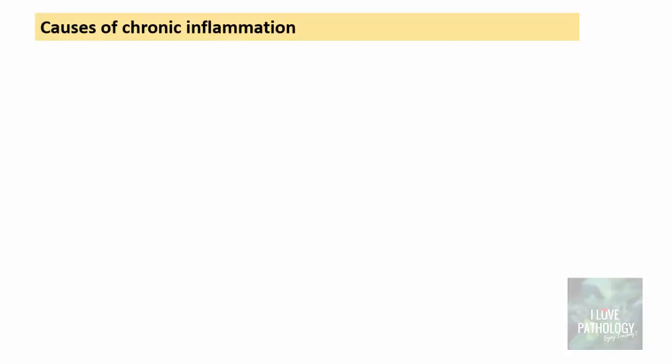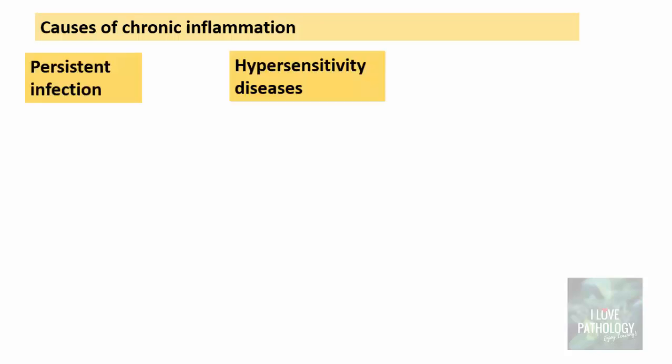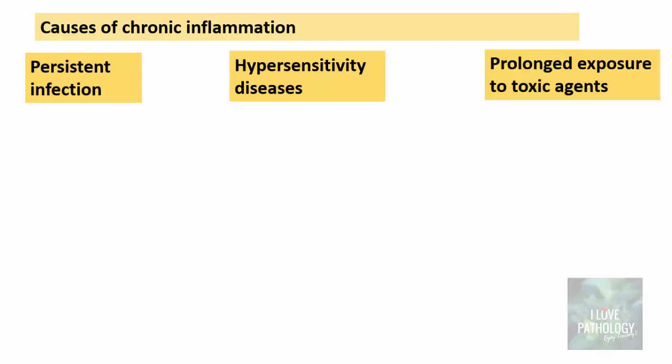What are the causes of chronic inflammation — the settings where it can be observed? One, it can be in the setting of a persistent infection. Two, it can be due to hypersensitivity diseases. And three, it could be because of prolonged exposure to toxic agents.